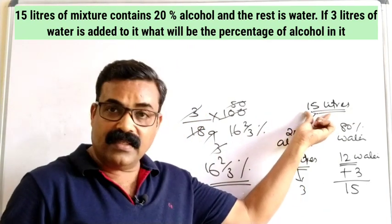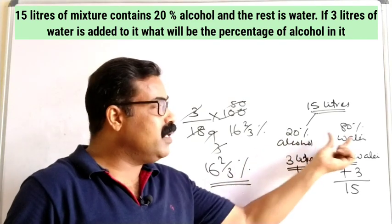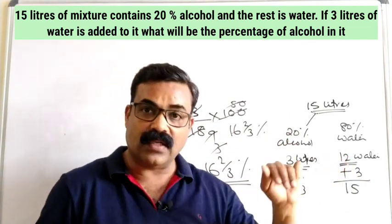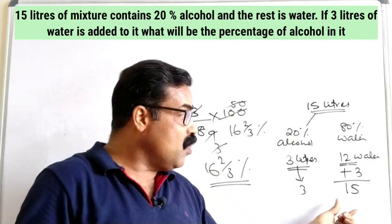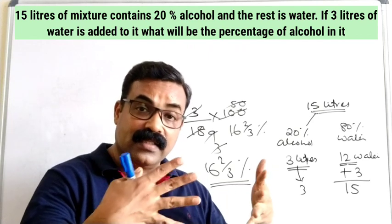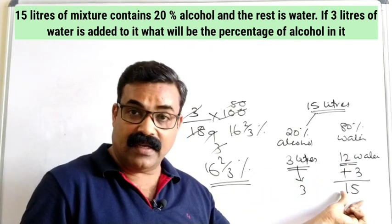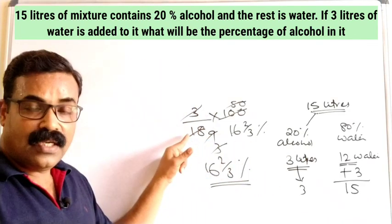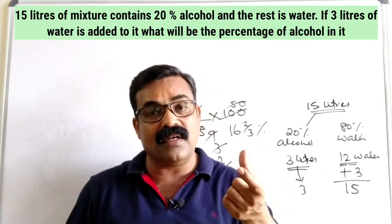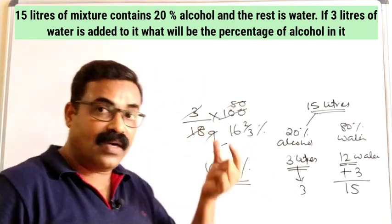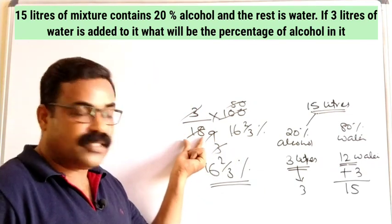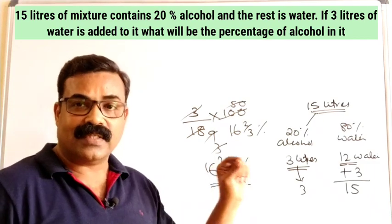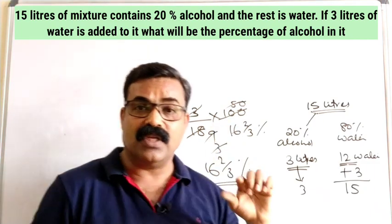To summarize: 15 liters with 20% alcohol gives 3L alcohol and 12L water. Adding 3L more water gives 18L total with 3L alcohol still. Percentage of alcohol = (3/18) × 100 = 16.67%, that is 16⅔%. Mark the correct option accordingly.